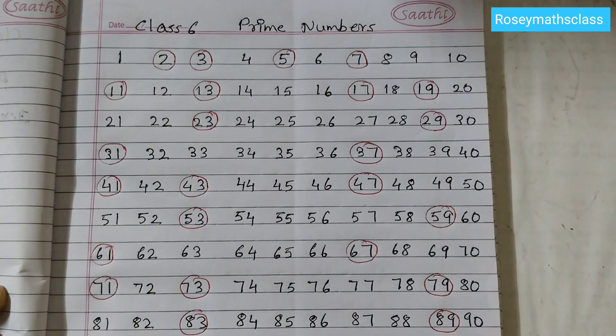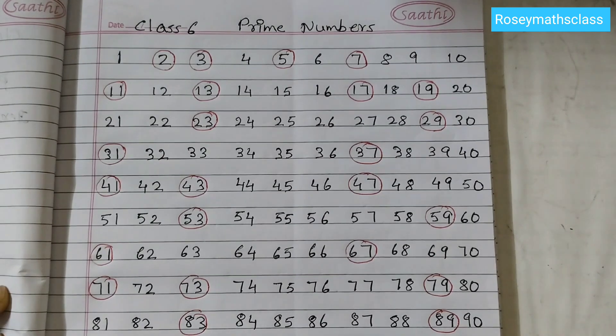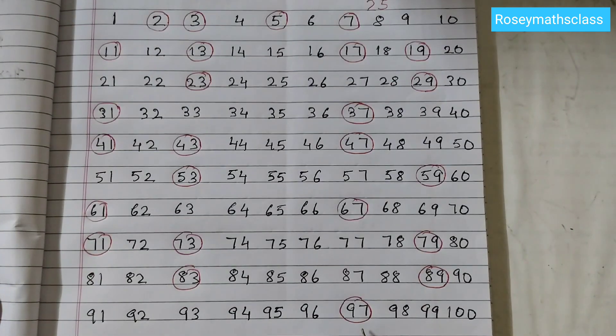And last row we just have one prime number which is 97.